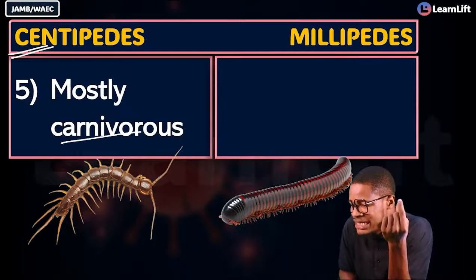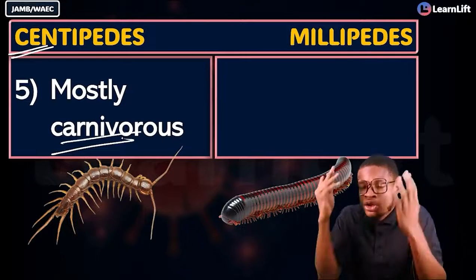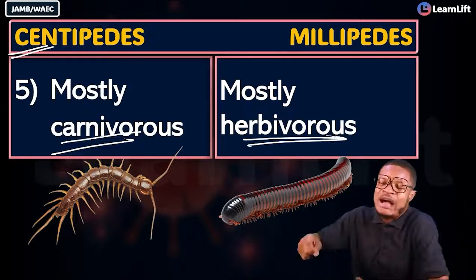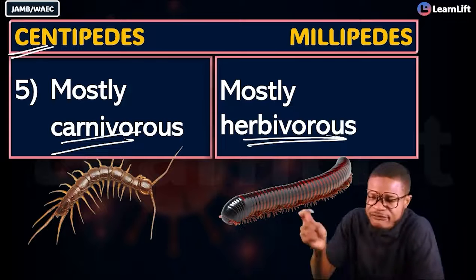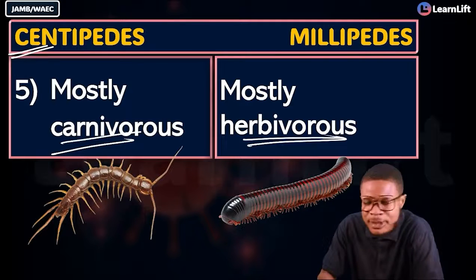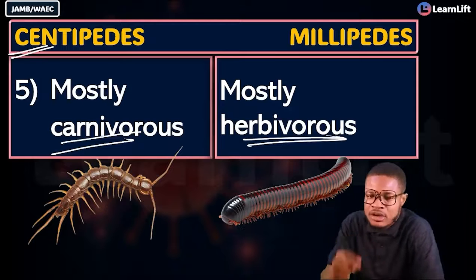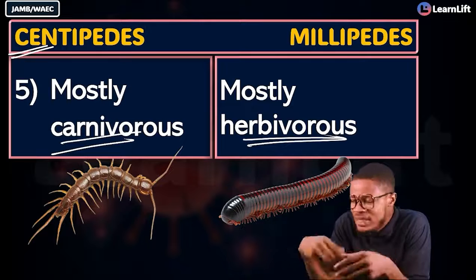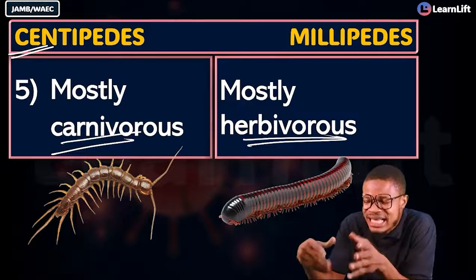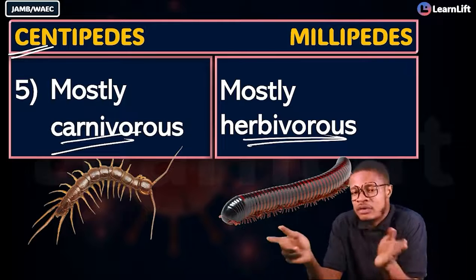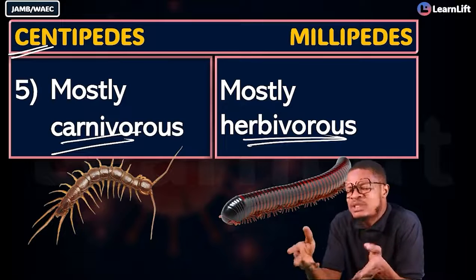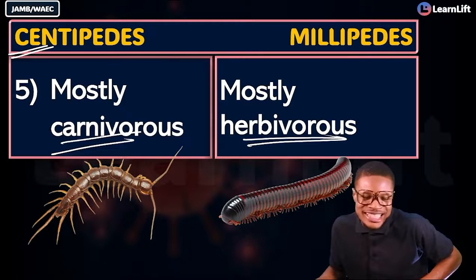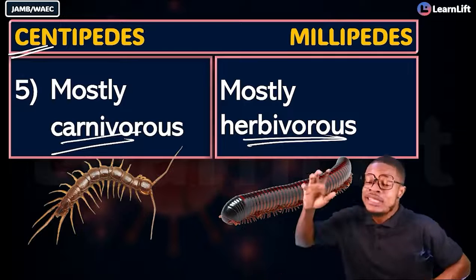The fifth difference: centipedes are mostly carnivorous — they hunt small insects and worms. Millipedes are mostly herbivorous and also detritivores, feeding on dead and decaying organisms. So centipedes are carnivores while millipedes eat plants and decaying matter.